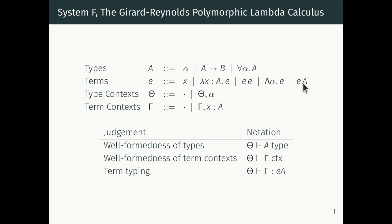Because we've added variables to our types we now need two typing contexts. We need a context for the type variables, which we write theta, and a context for the term variables, which we continue writing gamma. We now have several judgments: a well-formedness judgment for types which says A is a well-formed type in the type variable context theta, and a well-formedness judgment for term contexts. We also have a term typing judgment which says that given the two contexts theta and gamma, e has the type A.